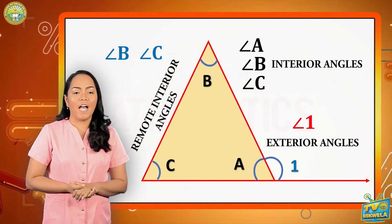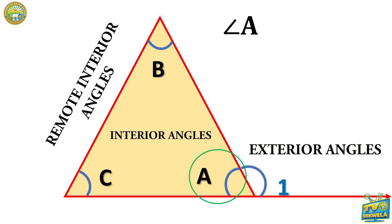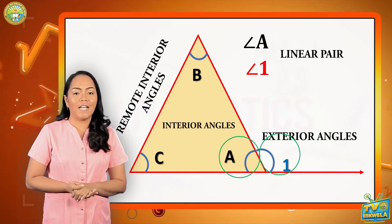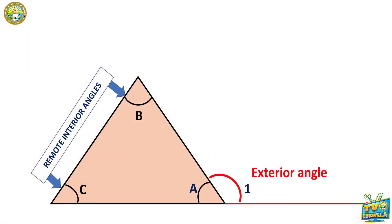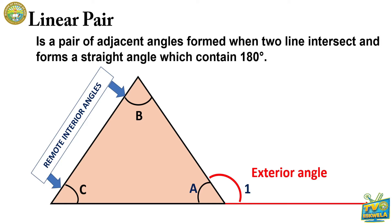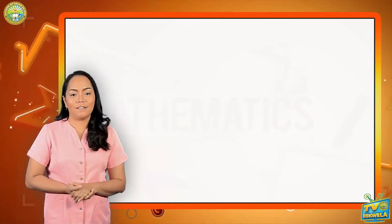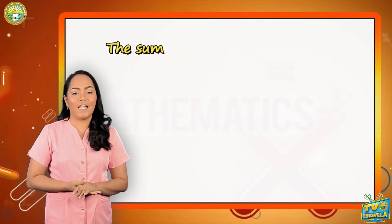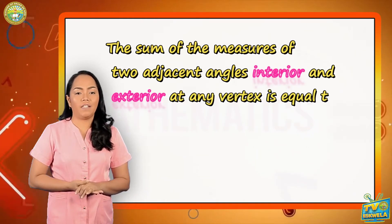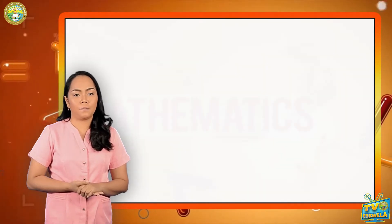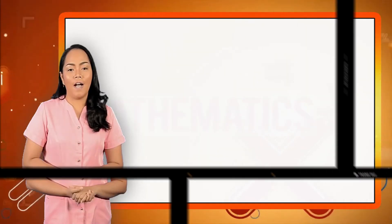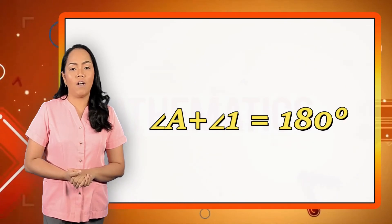As we studied the illustration, angle A is the adjacent angle of angle 1, where they form a linear pair or supplementary angle — which completes the fourth keyword. The linear pair, or supplementary angle, is a pair of adjacent angles formed when two lines intersect and form a straight angle equal to 180 degrees. Always remember that the sum of the measures of two adjacent angles — interior and exterior at any vertex — is equal to 180 degrees. Thus, the formula is: angle A plus angle 1 is equal to 180 degrees.